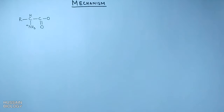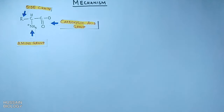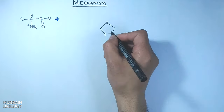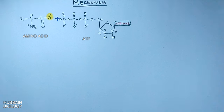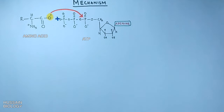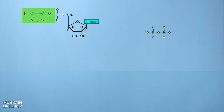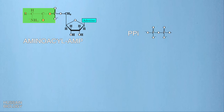Looking at the mechanism in detail: the amino acid has an amino group, a carboxylic group, and a side chain. It reacts with ATP in the presence of aminoacyl tRNA synthetase. The oxygen atom on the carboxyl group carries a negative charge due to a lone pair of electrons, which mediates the reaction — the carboxyl of the amino acid attacks a phosphorus of ATP. Two pyrophosphates leave, thereby forming a covalent linkage between the oxygen of the amino acid and the phosphorus of AMP, producing aminoacyl-AMP.